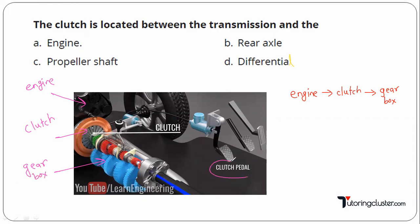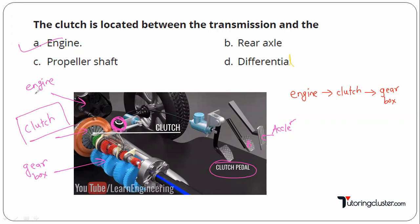This is the clutch pedal, this is the brake pedal, and this is the accelerator. So basically the clutch is located between the transmission and the engine. You can also see here the gear lever to change the gears. I found this diagram useful so I have used it. I hope now the location of clutch is clear — it is between engine and gearbox.